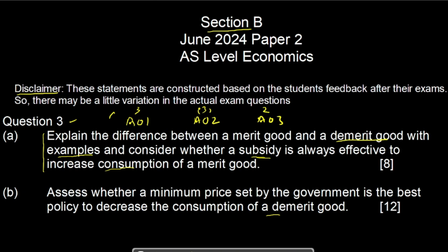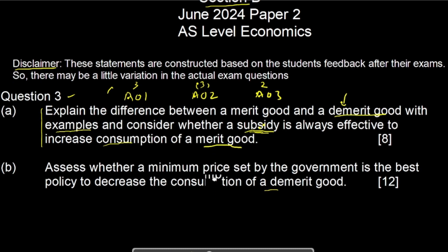Now moving to the subsidy. A subsidy is a kind of financial support or financial grant provided by the government to support private producers so that they produce a greater quantity of merit goods. Subsidies are given for merit goods, not for demerit goods — because demerit goods are harmful, the government imposes indirect taxes on those. For merit goods, the government provides a subsidy to the private sector so they can produce more merit goods and overall society can benefit.